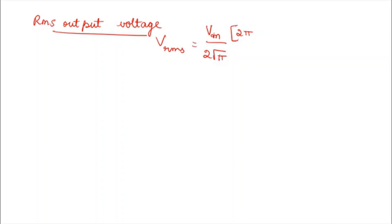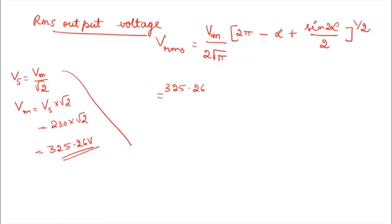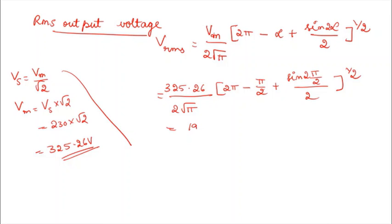Next is the RMS output voltage. The formula involves Vm, and Vm is calculated from Vs equals Vm by root 2, so Vm equals Vs into root 2. Vs is 230 volts, so 230 into root 2 gives 325.26 volts. Substituting: Vrms equals 325.26 divided by 2 root pi, with pi minus alpha (pi by 2) plus sine of 2 times pi by 2, all to the power half, giving 199.2 volts.